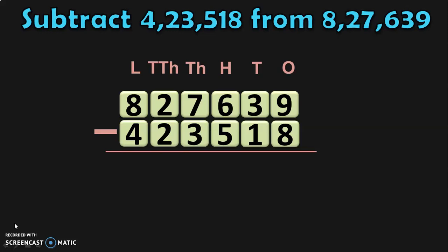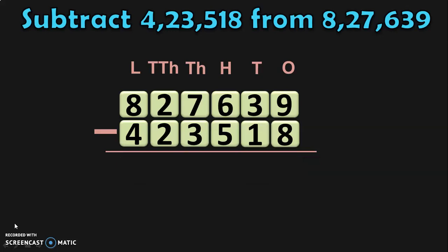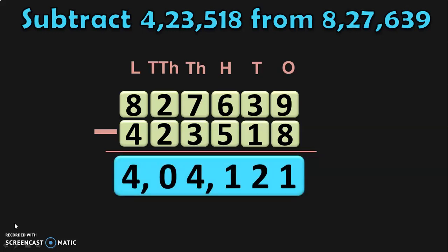9 minus 8 is 1. 3 minus 1 in the tens place is 2. Next, move on to the hundreds place where you have 6 minus 5, which is 1. In the thousands place, we have 7 minus 3, which gives you 4. In the ten thousands place, you have 2 minus 2, which gives you 0. In the lakhs place, you have 8 minus 4, which gives you 4. So, the answer is 4,04,121.